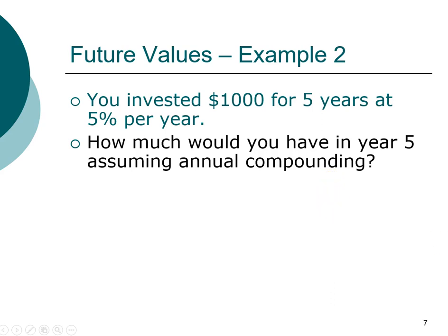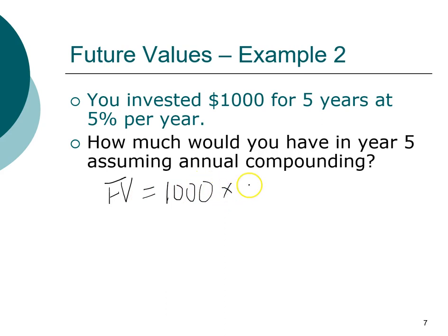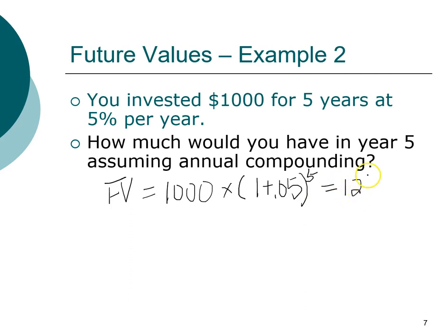Welcome back. Let's solve this problem. We have one thousand dollars earning five percent, invested for five years. Using the future value formula — one thousand times one point zero five raised to the power of five — that turns out to be one thousand two hundred and seventy-six dollars and twenty-eight cents.